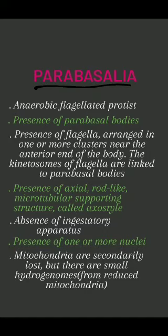Absence of ingestatory apparatus. Presence of one or more nuclei. Mitochondria are secondarily lost, but there are small hydrogenosomes. Hydrogenosomes are membrane-bound organelles found in the cytoplasm of eukaryotic cells — they are reduced mitochondria.